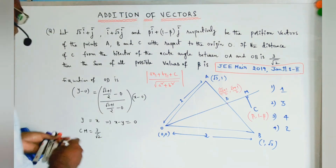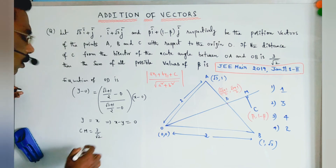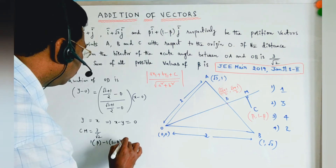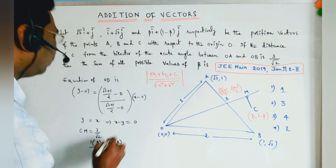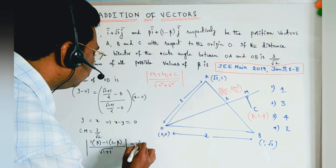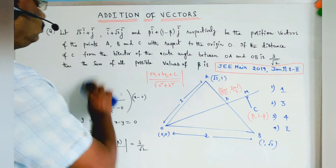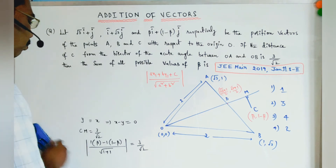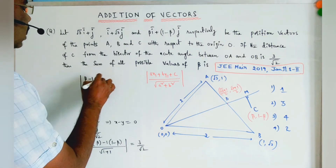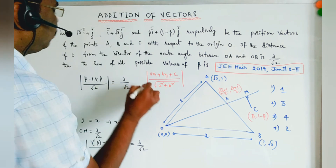Substituting: CM = |1·β + (−1)·(1−β)| / √(1²+(−1)²) = |β − 1 + β| / √2 = |2β − 1| / √2 = 3/√2. Cancelling √2 from both sides gives |2β − 1| = 3.